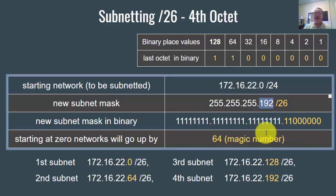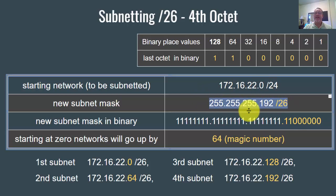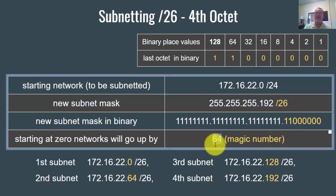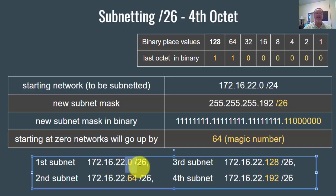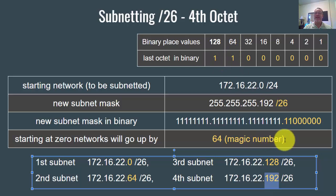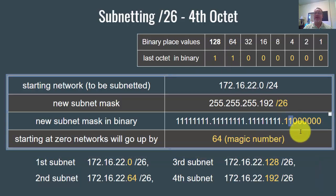The last one in the subnet mask is now in the 64s place. So when IP addresses with this subnet mask are ANDed with it, they fall into four different networks. Those networks will go up by the magic number 64. So you'll have networks at 172.16.22.0, then 64, then 128, then 192 — incrementing by 64 based on where the last significant bit falls in the subnet mask.